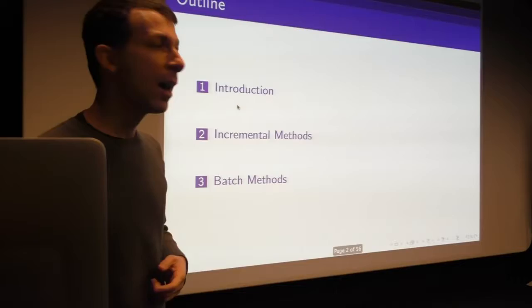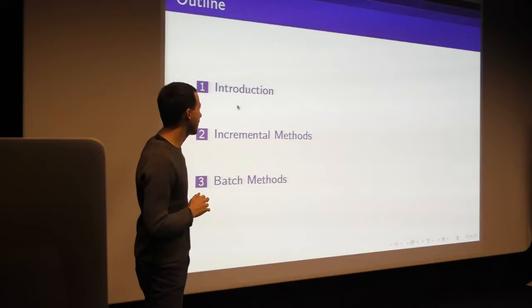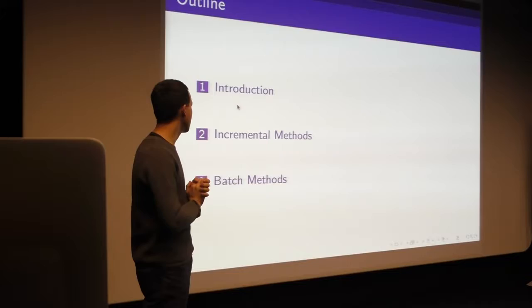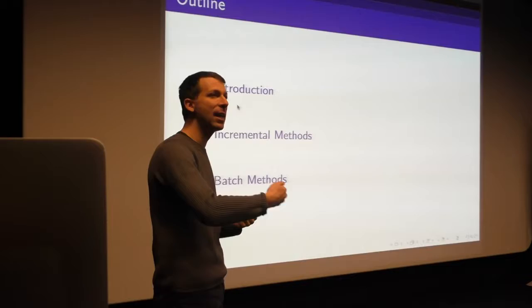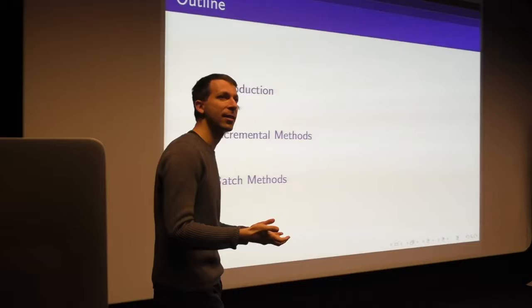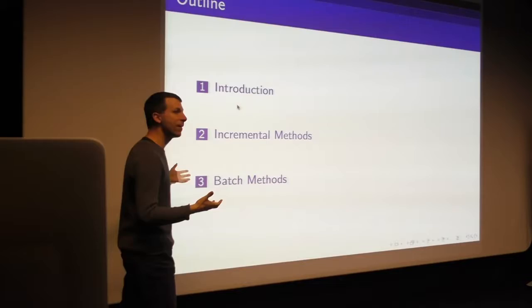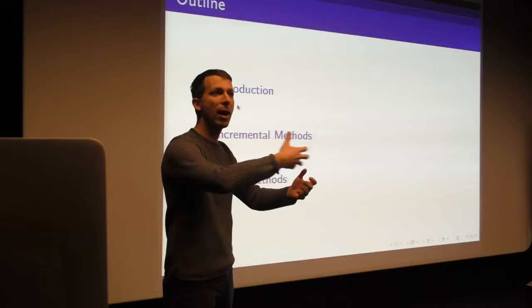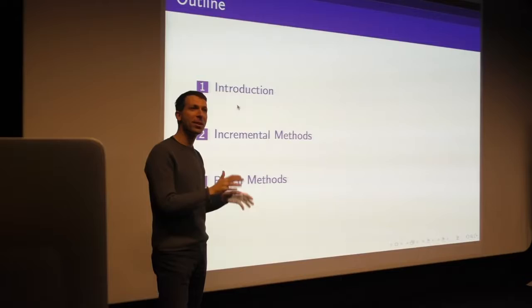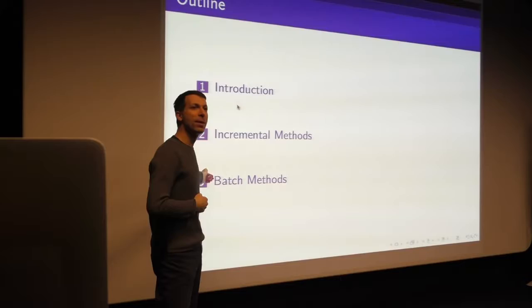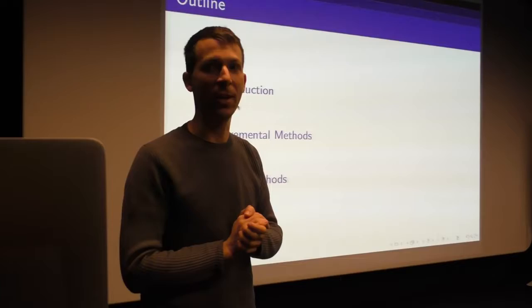The outline is fairly simple. We'll start by understanding the basic space we're working in, then split into two approaches. First, incremental methods: you take a function approximator like a neural network and incrementally, every single step, you update your value function online as new data comes in. Then we'll look at more data-efficient batch methods that consider the whole history of data to fit your value function. The split is a little grey but it's a helpful distinction for understanding value function approximation methods.